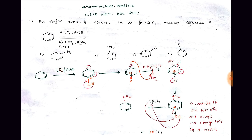Coming to the given problem: in the first step, pyridine reacts with hydrogen peroxide and acetic acid. This H2O2 and acetic acid can oxygenate the nitrogen. The possible mechanism is: acetic acid produces H⁺, which attacks one of the oxygens of hydrogen peroxide. The lone pair of electrons on nitrogen attacks the oxygen, followed by cleavage of a water molecule, giving an O⁻.